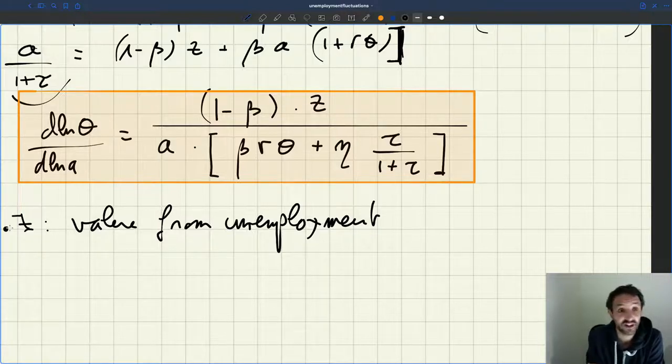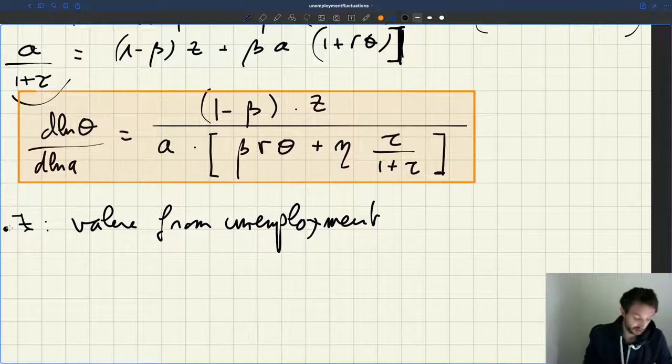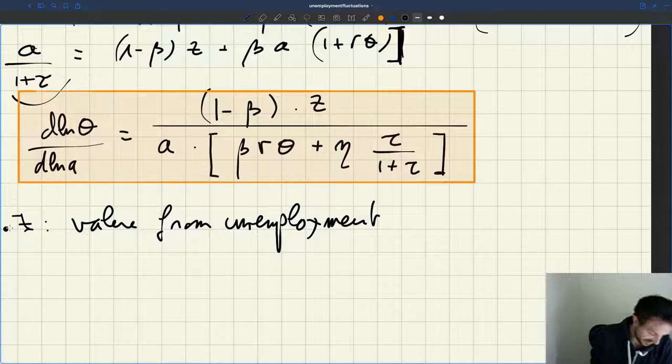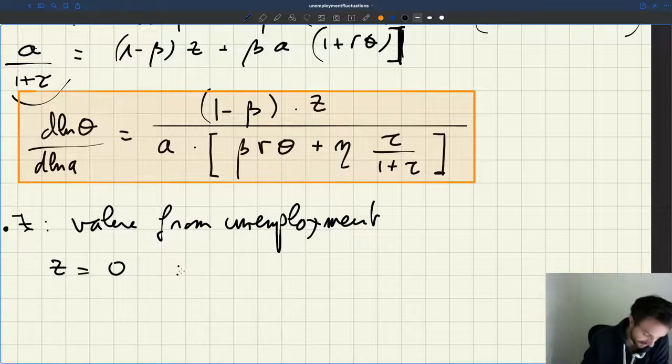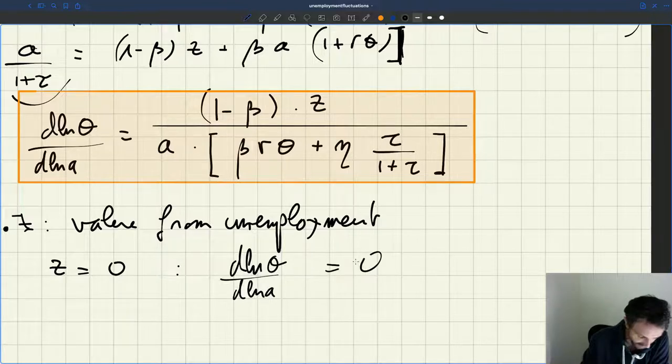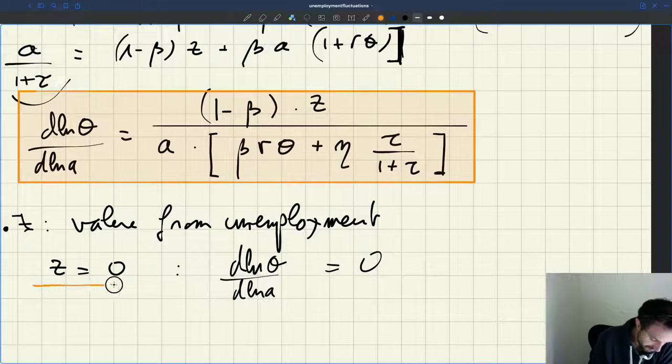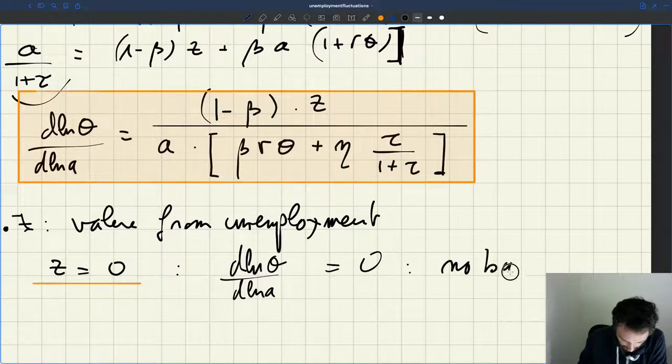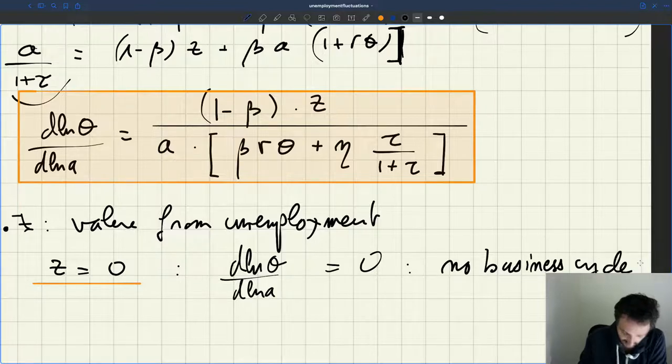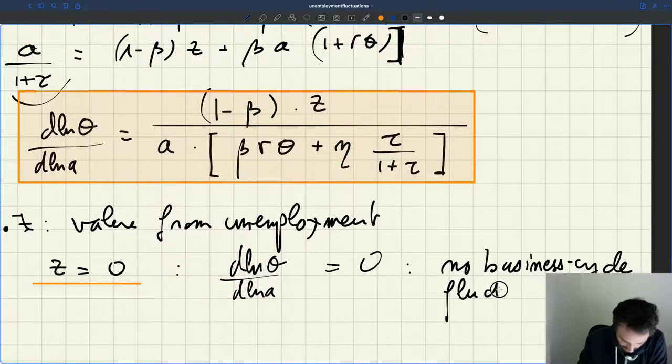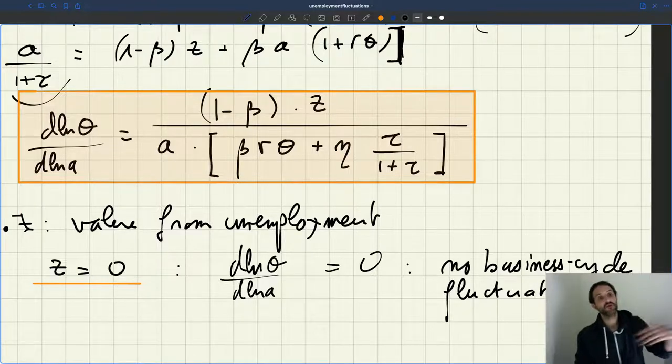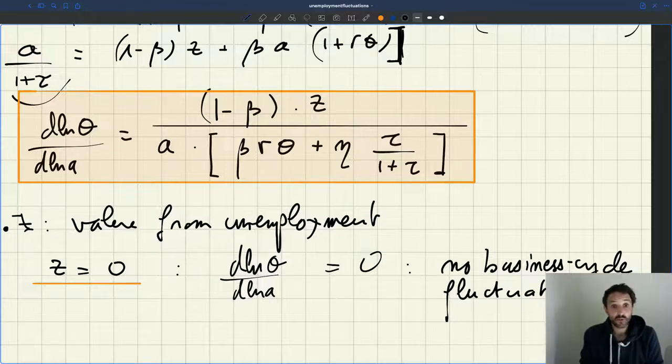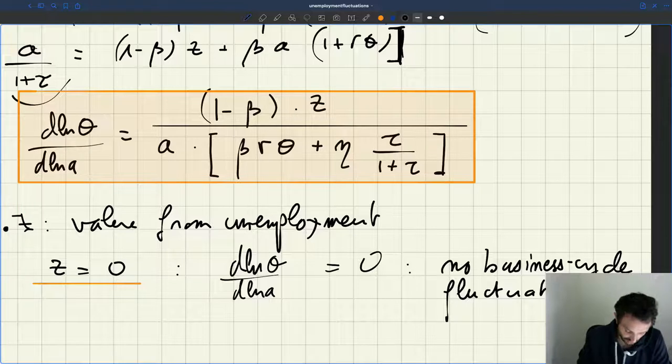So it's not clear whether Z is positive or negative. In fact, Z could be negative if the net effect of being unemployed is negative, if there's actually a cost from unemployment. There's evidence pointing in that direction. So we don't know if Z is positive or negative. Something we see immediately is that if Z equals zero, which is not an unreasonable calibration, D log theta D log A is exactly equal to zero. In the case Z equals zero, your model doesn't give you any business cycle fluctuation.